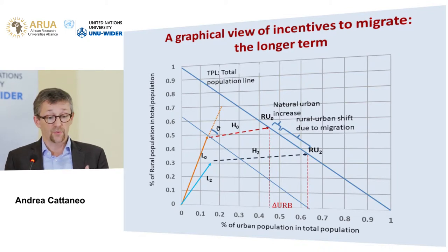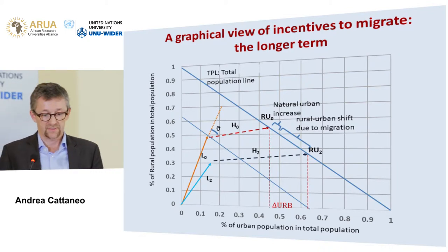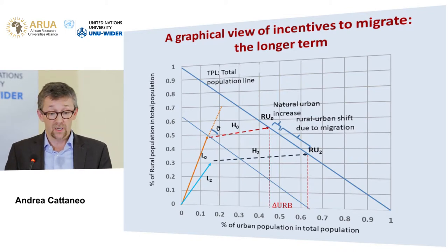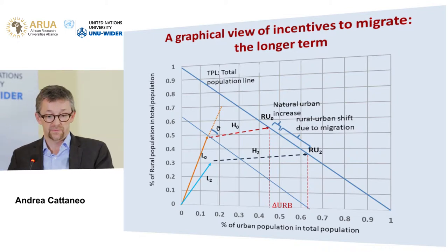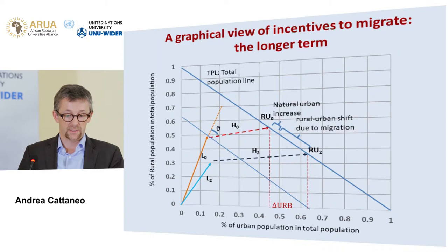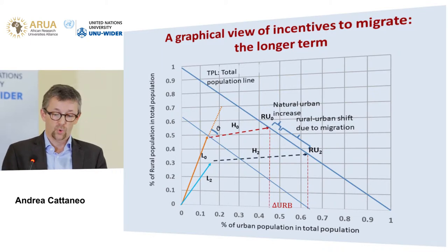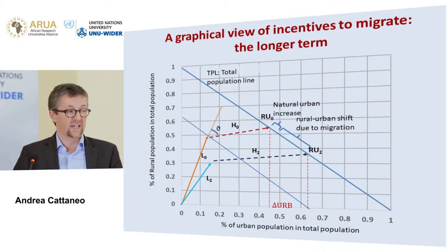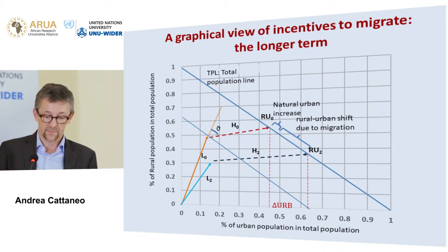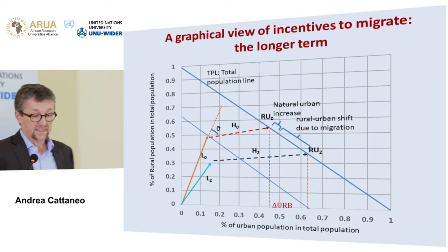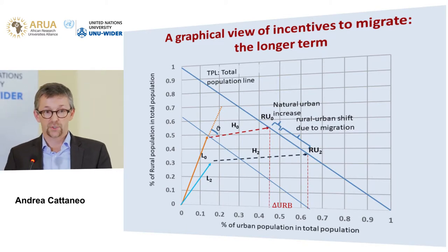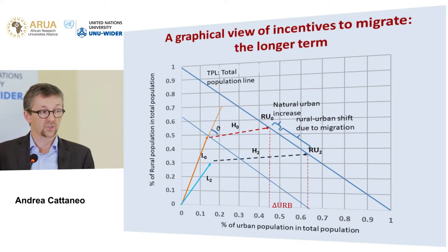In the longer term it's clearly more complicated. There are dynamics of development that make it difficult to say exactly what will happen. For example, over time the people above the poverty line in urban areas will absorb the rural people who migrated — moving off that iso-poverty diagonal line — thereby changing the nature of the incentives to migrate or not.